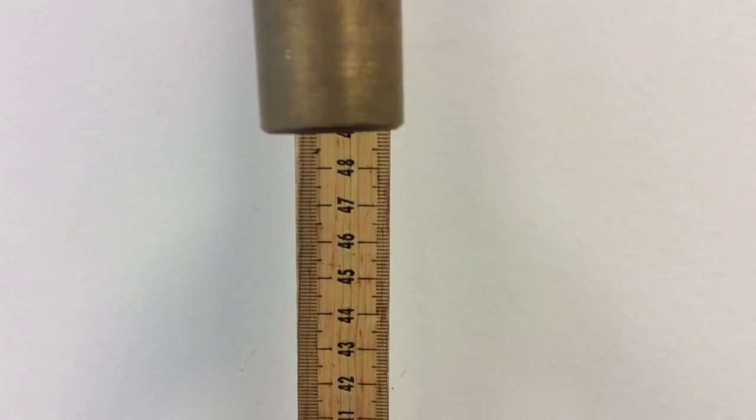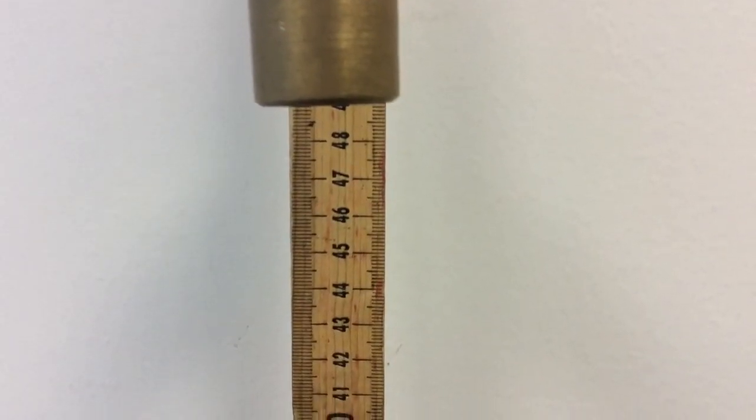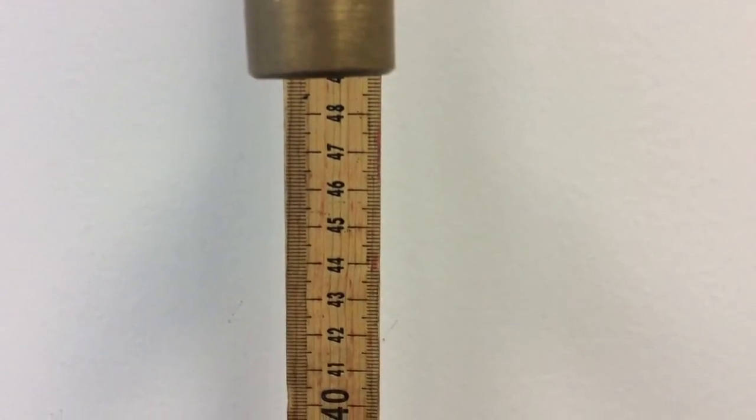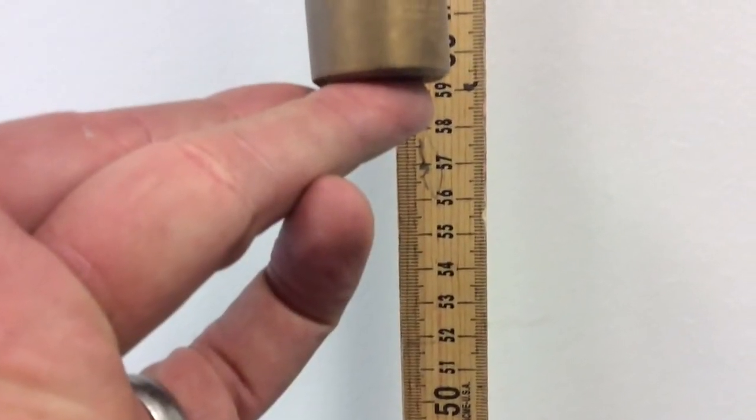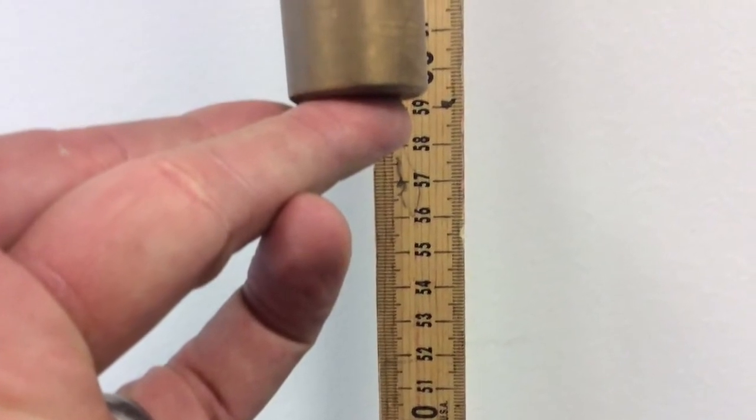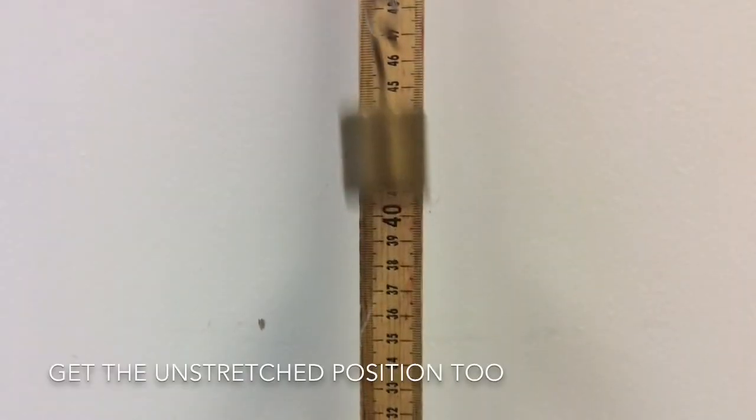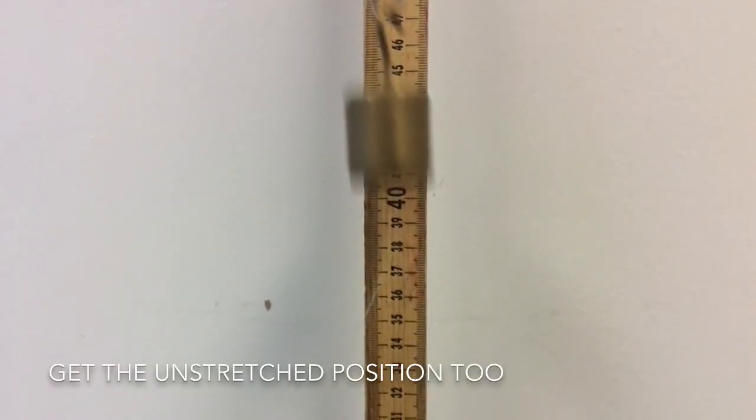Using the bottom of your mass as a reference point, you will need the equilibrium position, the middle, the top position that you have predetermined, and as it's moving you will measure the bottom position. And don't forget to get that unstretched position.